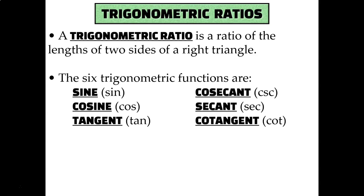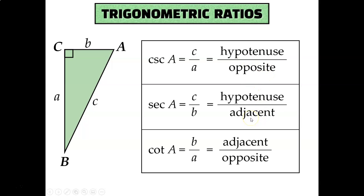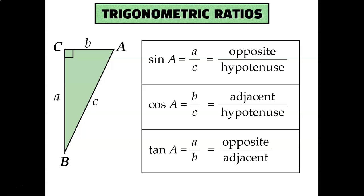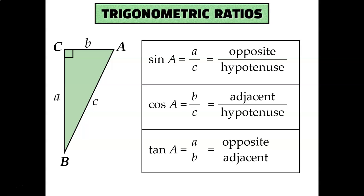Sine is the ratio of the opposite side and the hypotenuse. Cosine is the ratio of the adjacent side and the hypotenuse. Tangent is the ratio of the opposite side and the adjacent side. These fractions, along with cosecant, secant, and cotangent, are all of the various combinations of opposite, adjacent, and hypotenuse. These six fractions are the only ways to compare two of the three sides of a triangle.